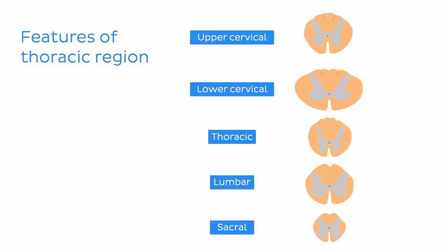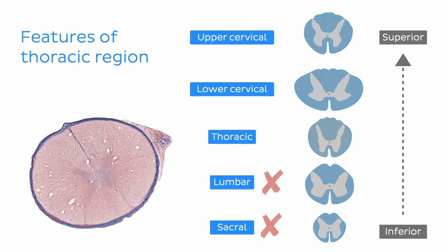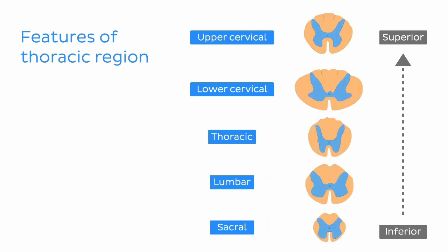The first thing to note is the amount of white matter present in our section. As we move from inferior to superior along the spinal cord, the amount of white matter increases as more and more sensory nerve fibers join the ascending tracts to the brain. Therefore, we know that this histological section is not taken from a lower lumbar or sacral region. Furthermore, the relative amount of grey matter is significantly higher in cervical and lumbosacral regions, as motor neurons supply a large number of structures in the limbs originating there. The thoracic and upper lumbar regions have relatively small amounts of grey matter by comparison.